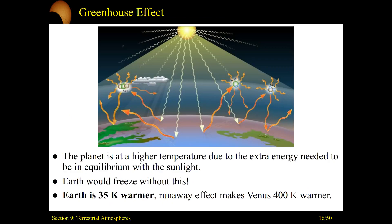Without the greenhouse effect, Earth would be a frozen tundra. Because of greenhouse gases in our atmosphere, Earth's surface is about 35 Kelvin warmer — warm enough that our oceans don't freeze over. The greenhouse effect is not inherently a bad thing; we're just talking about physics and astronomy here. Without a certain level of greenhouse gases — CO2 and water (H2O) — Earth would freeze. We need greenhouse gases to keep this planet hospitable for us.